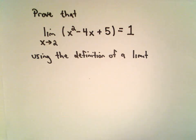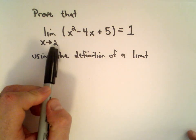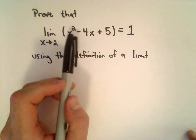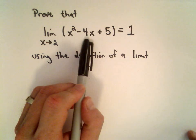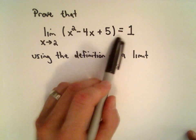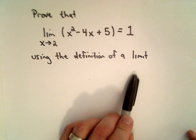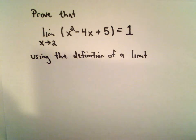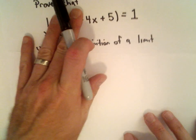In this example, we're going to prove the limit as x approaches 2 of the function x squared minus 4x plus 5 equals 1, using the precise definition of a limit.